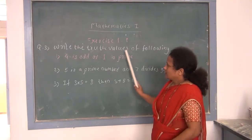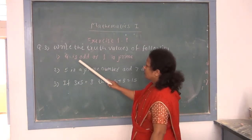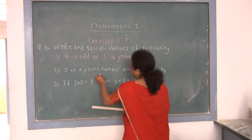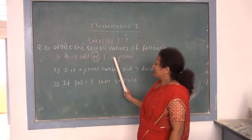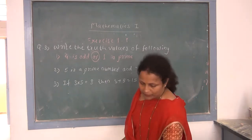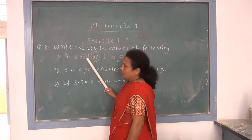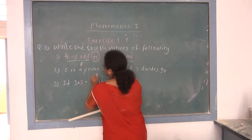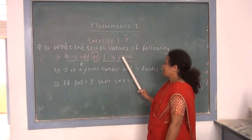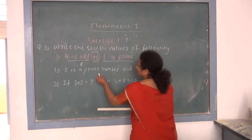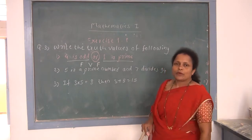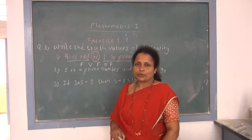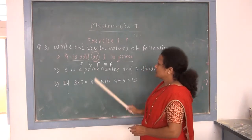Question 3: Find truth values of compound statements. First: '4 is odd OR 1 is prime.' P = '4 is odd' is false (4 is even), and Q = '1 is prime' is false (1 is neither prime nor composite). In disjunction, F ∨ F = F. So the resultant statement is false.